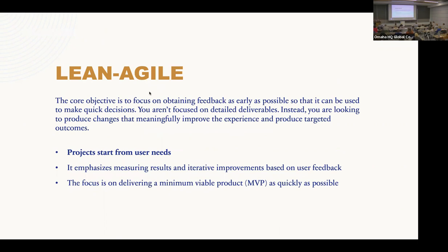Another type of Agile is called Lean Agile, which adds a method of lean thinking to the agile process — lean meaning something that is more efficient while creating less waste. In Lean Agile, the core objective is to focus on obtaining feedback as early as possible so that it can be used to make quick decisions. You aren't focused on detailed deliverables, but instead you're looking to produce changes that meaningfully improve the experience for your users and produce targeted results. Projects start from user needs, emphasize measuring results and iterative improvements based on user feedback, and the focus is on delivering a minimum viable product as quickly as possible. Essentially, Lean Agile is about doing as little as possible to work as much as you can — that more efficiency with less waste mindset.